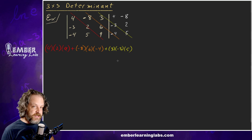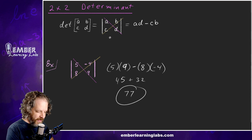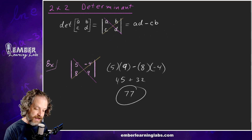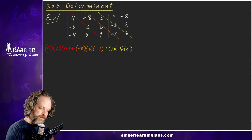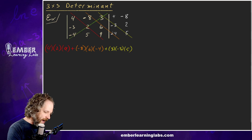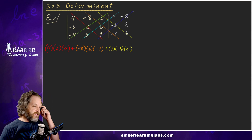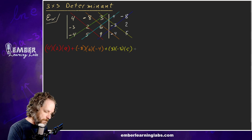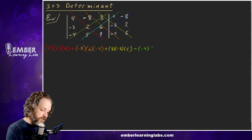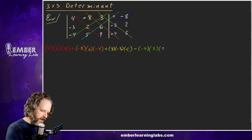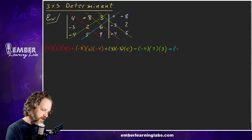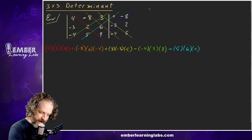Now, just like with the 2x2 matrix, we subtract the going-up diagonals. We're going to subtract all three of the going-up diagonals. So we do minus negative 4 times 2 times 3 for the first, then minus 5 times 6 times 4 for the next one.